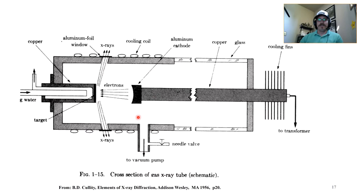Here is a gas x-ray tube, where you have a cathode, a gas (not thermionic emission), and you ionize the gas in the tube. The electrons hit the target as a result of the cathode being energized, generating x-rays.